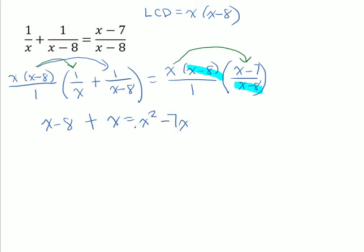Notice this time we have a quadratic equation. That is, we have an x squared in there. So, let's first combine like terms on the left-hand side. x plus x gives us 2x, so we get 2x minus 8 is equal to x squared minus 7x.